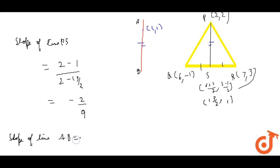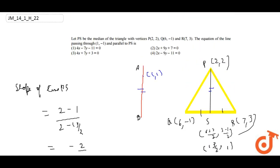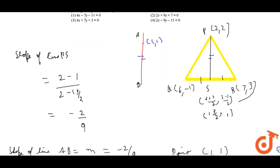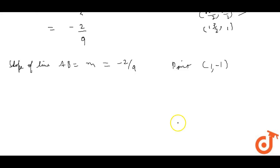The slope of line AB will be minus 2/9 because this line is parallel to line PS. And we have one point: (1,-1).